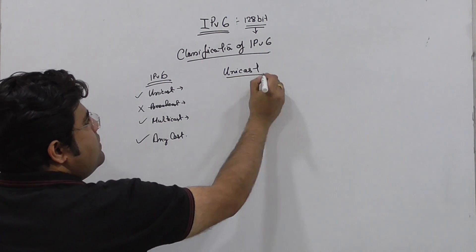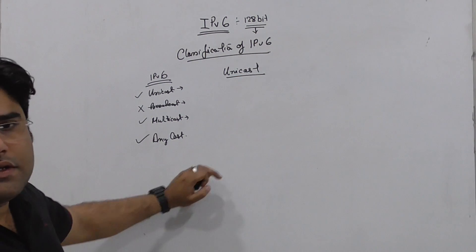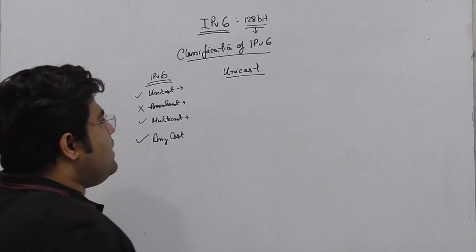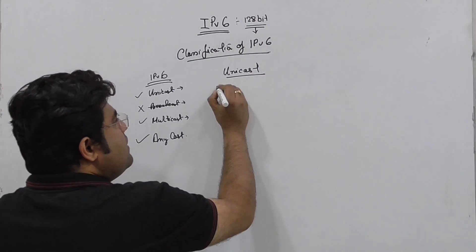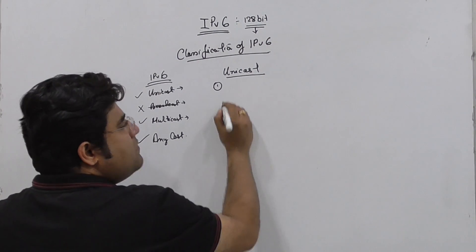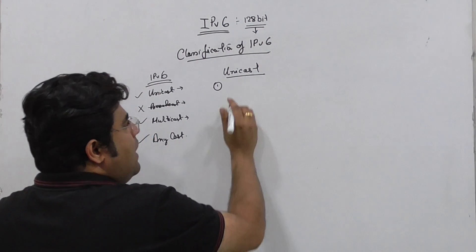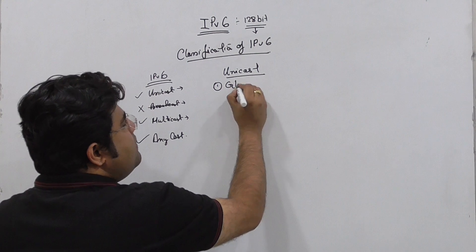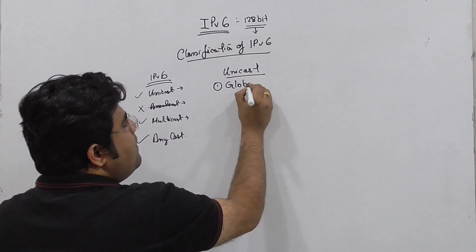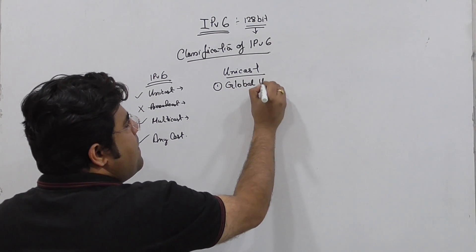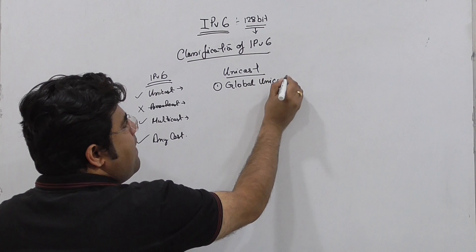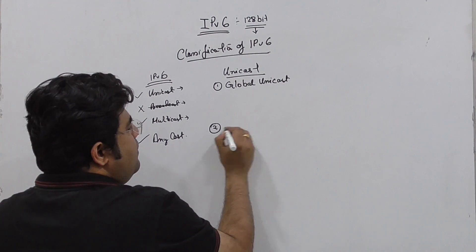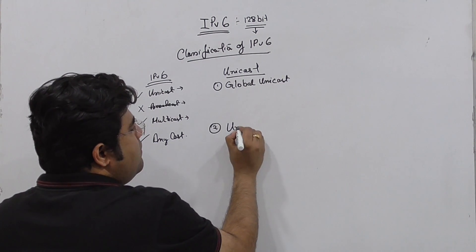What are the unicast IP types in IPv6? Under unicast we have three subtypes: global unique addresses, unique local addresses, and link local addresses.